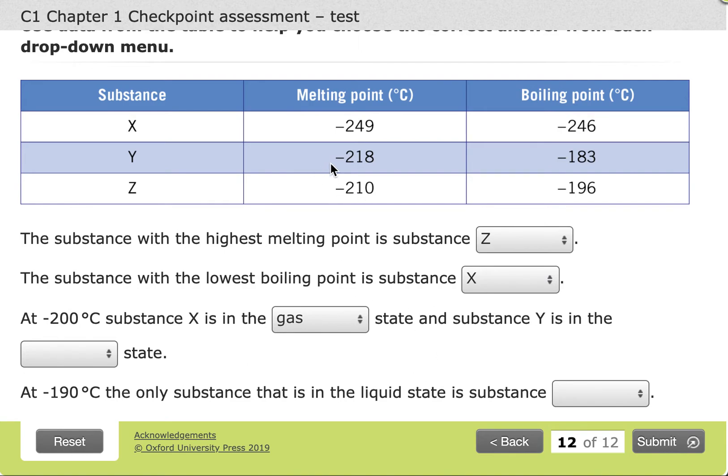Now we can do the same for substance Y. Look at our numbers. Minus 200 fits in between the melting and the boiling point. If we're in between the melting and the boiling point, then that means we are in the liquid state.